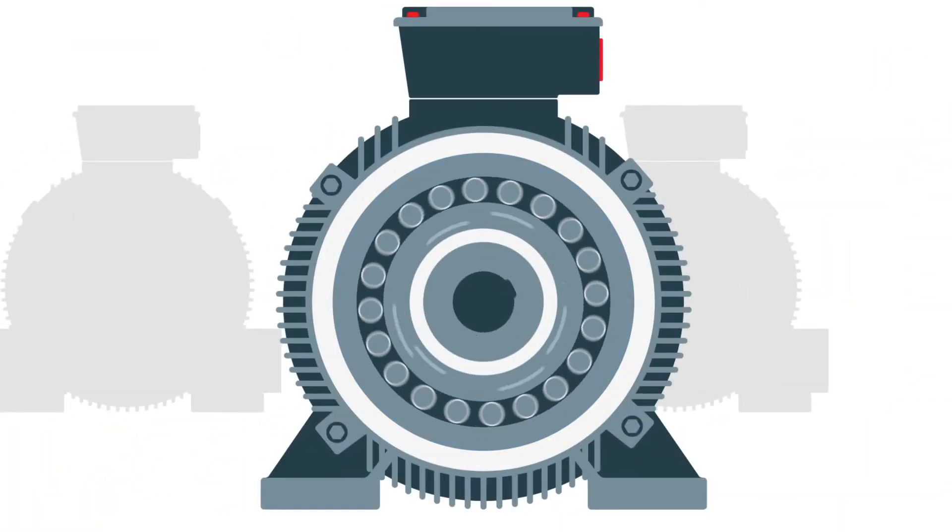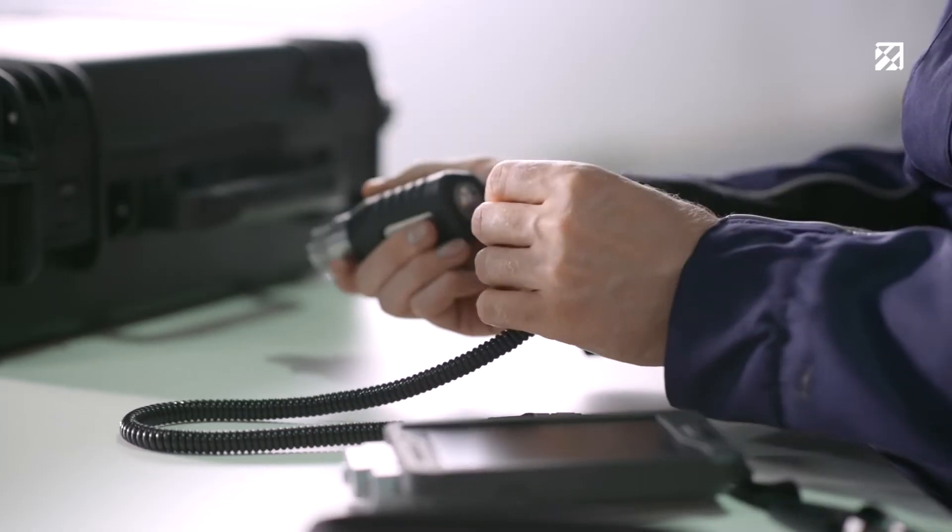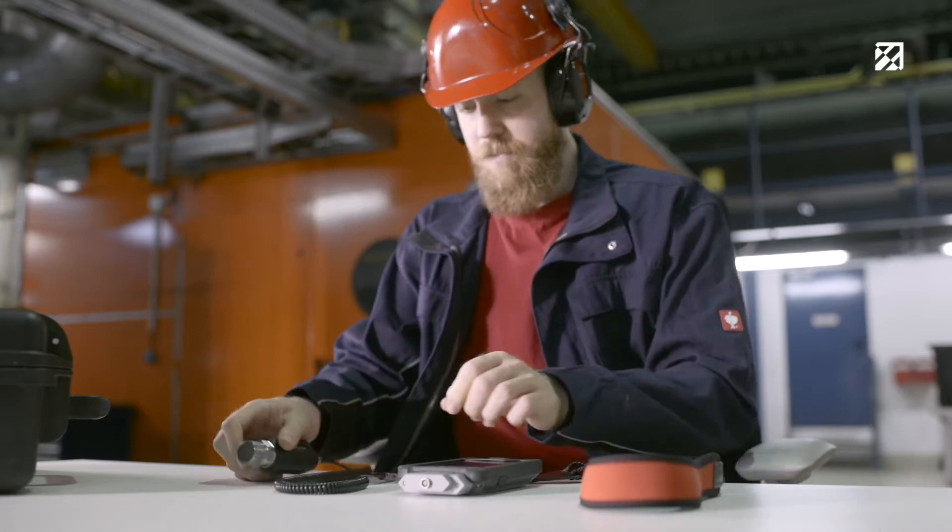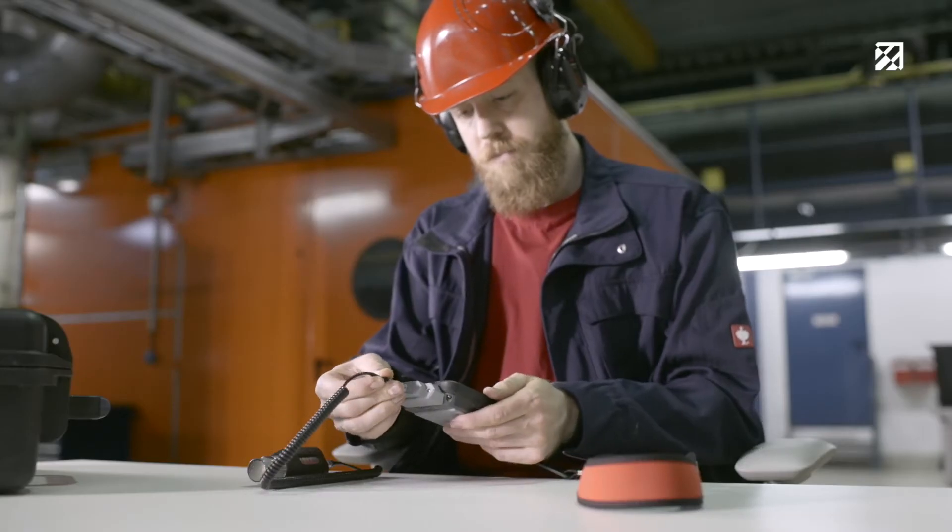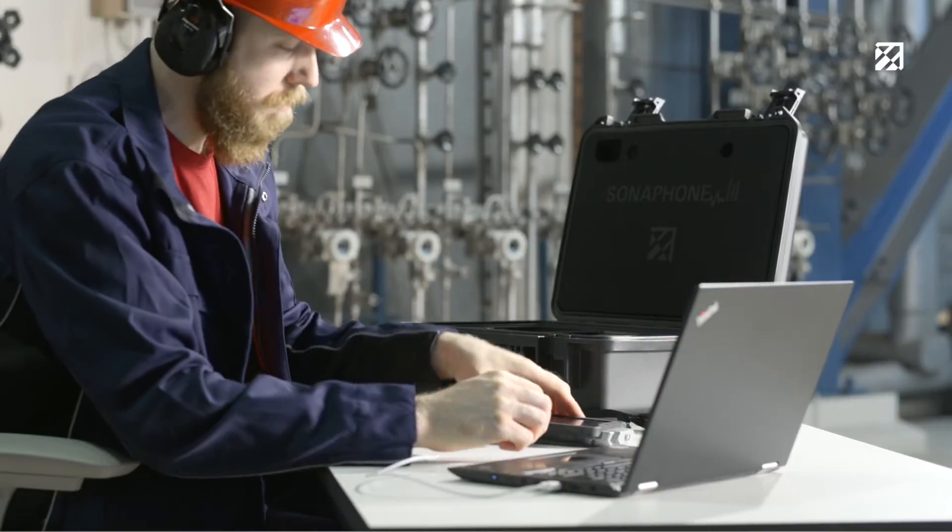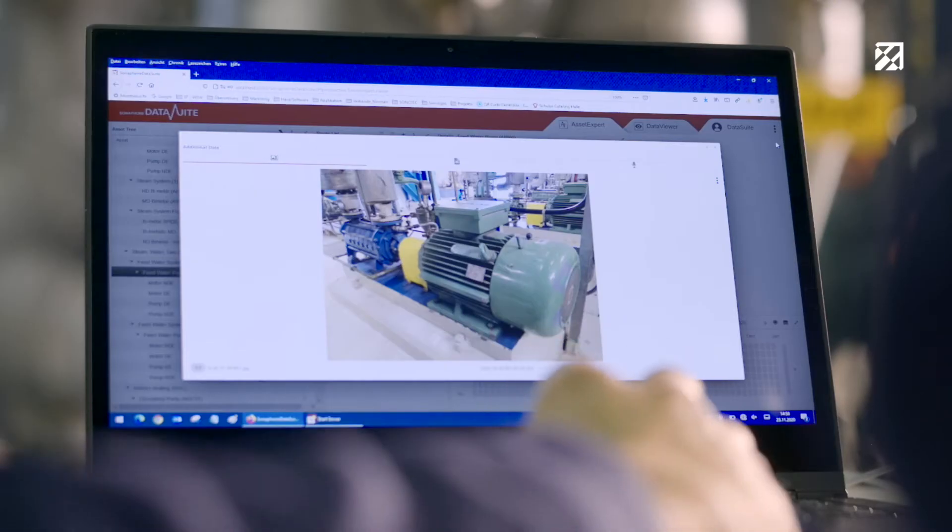The maintenance technician receives the order to check all roller bearings in Hall One. For this, he needs the Sonophone ultrasonic testing device and the BS40 broadband ultrasonic sensor. The organization of the measurement points is done with the Sonophone Data Suite.